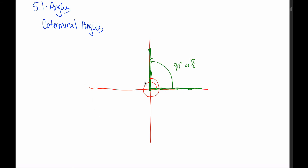If instead of drawing these angles we just ask ourselves where would these angles end or terminate if drawn in standard position, then the positive y-axis would not only represent a 90-degree angle, but also a 450-degree angle. It would also represent an 810-degree angle. All the way around the circle once is 360 degrees; another lap gives 720; I'd have to go another 90 to get to 810. So taking two full laps and ending at the same spot — 90 degrees, 450 degrees, and 810 degrees are all coterminal.